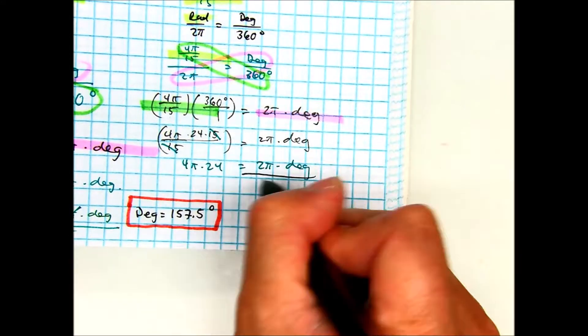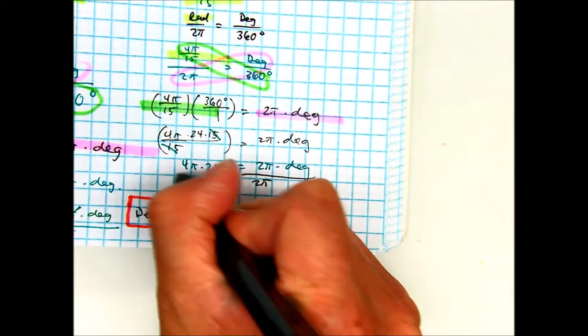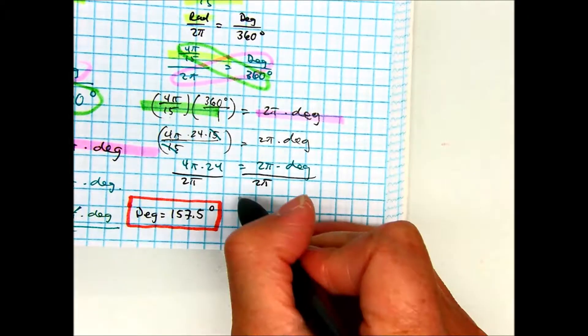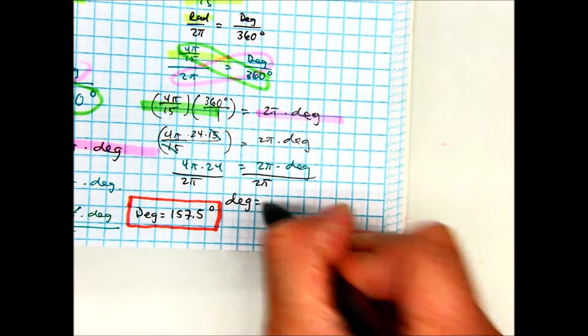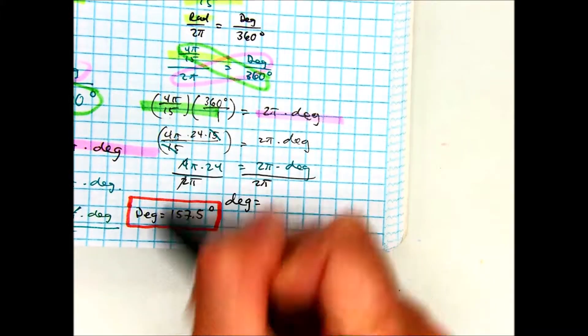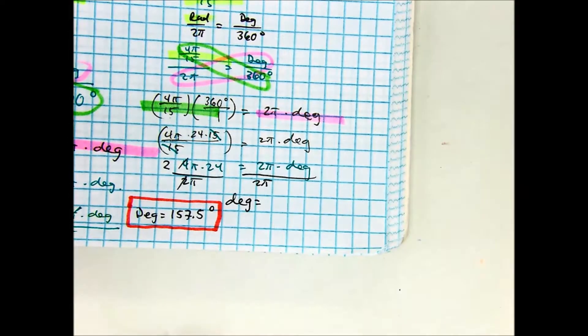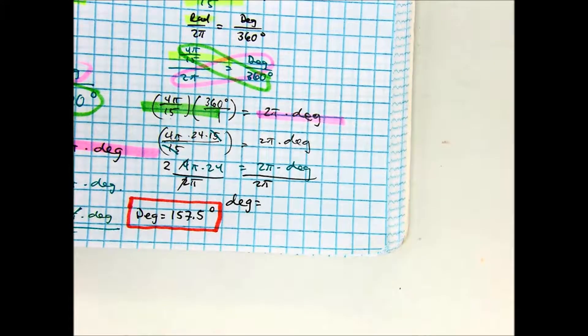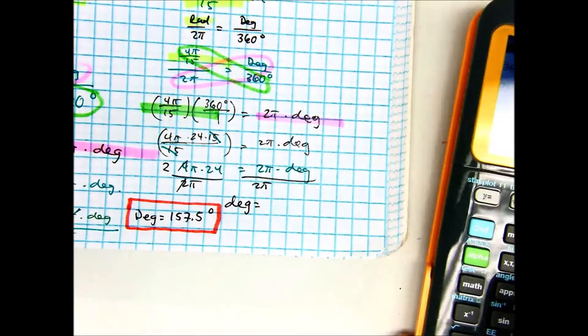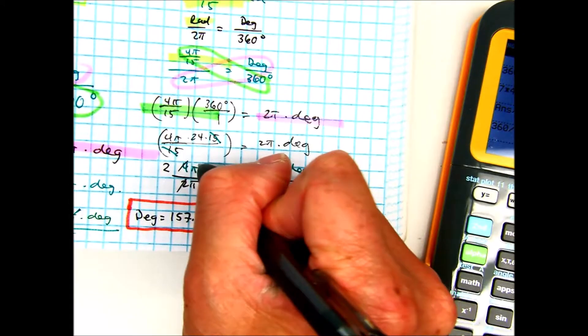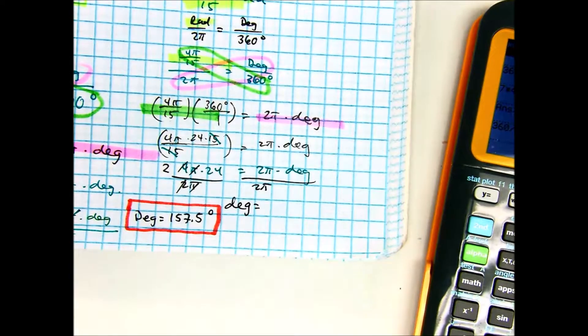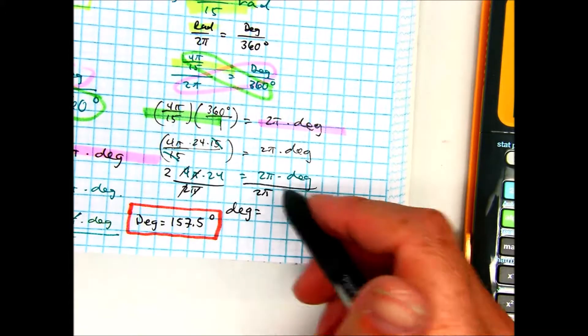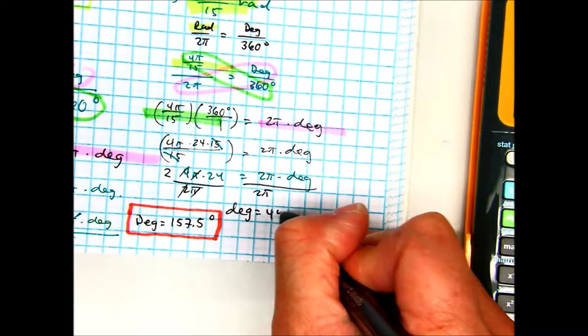Divide both sides by 2π. My degrees are going to be, that's a 2, right? So you are left with 48 π. And cancel out our π's. So 2 times 24 is 48 degrees. Raise your hand if you got that.